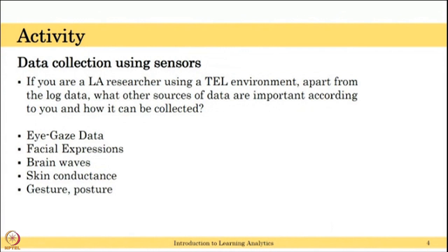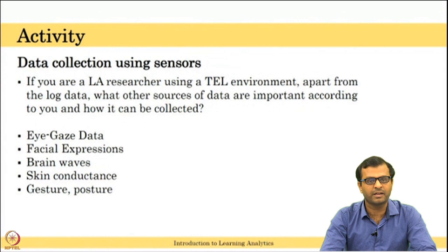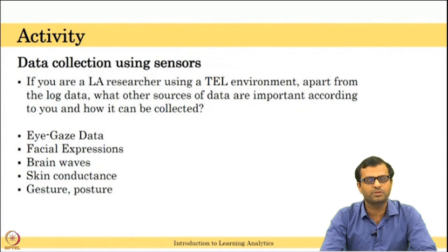How can it be collected? For eye gaze data, we can collect it using eye trackers. There are portable eye trackers available — for example, they can be attached to a laptop to get accurate eye gaze data, or simply you can use the webcam of the laptop to collect eye gaze information. For facial expressions, you can record students' facial expressions using the webcam in your laptop or an external webcam. For brain waves and skin conductance, you can use modular portable devices to collect these signals.